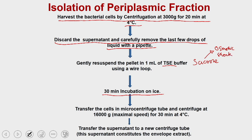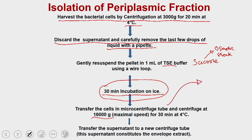As a result of the osmotic shock, the material present in the periplasmic fractions comes out into the supernatant. After 30 minutes, transfer the cells to a microcentrifuge and centrifuge at a very high speed of 16,000 g. This gives you a pellet containing the bacterial cell with cytosol, and the supernatant which contains the proteins present in the periplasmic fraction.